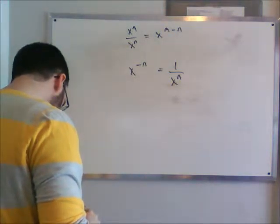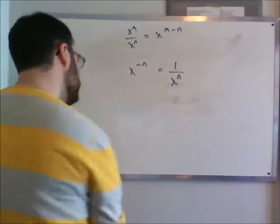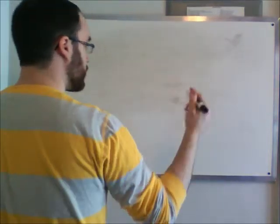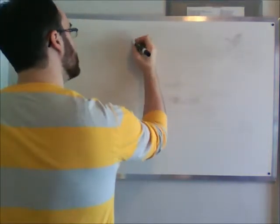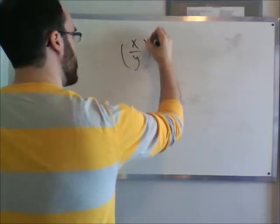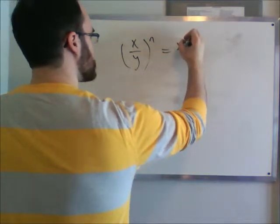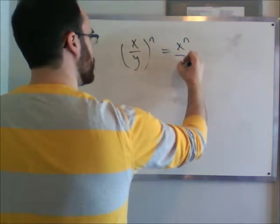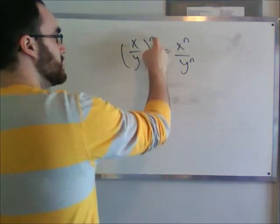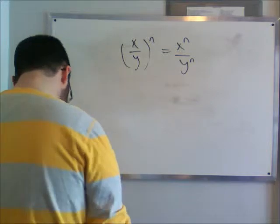x over y, all to the power of n, is just equal to x to the n over y to the n. It's simple — the n comes into both the top and bottom of the fraction.